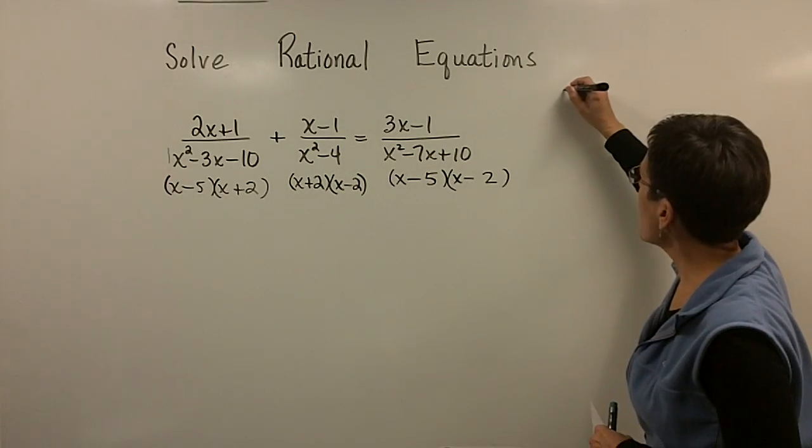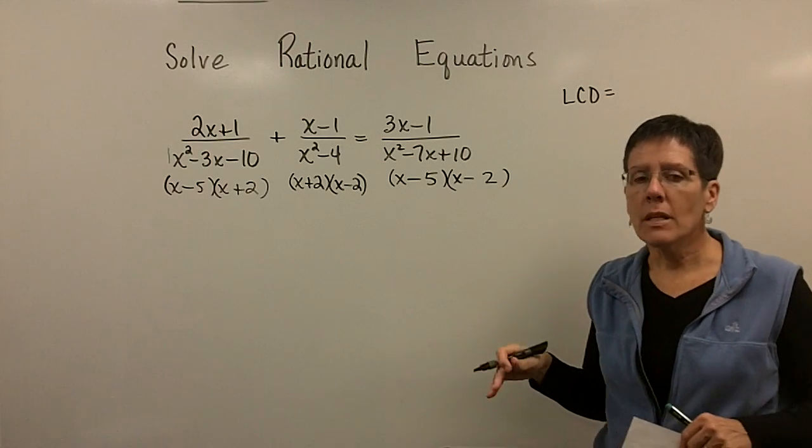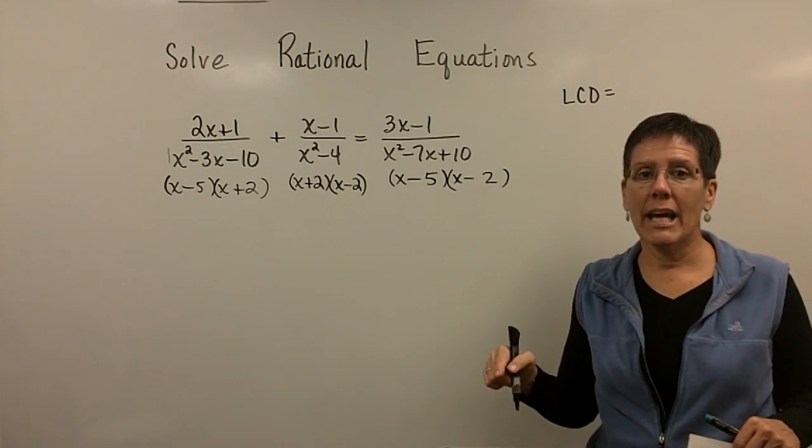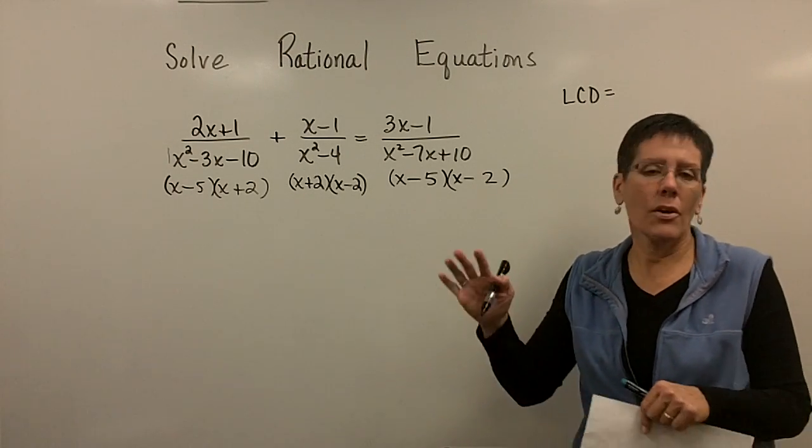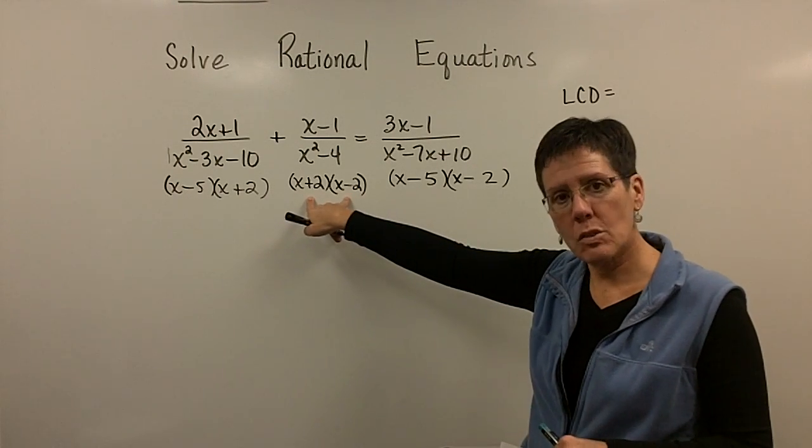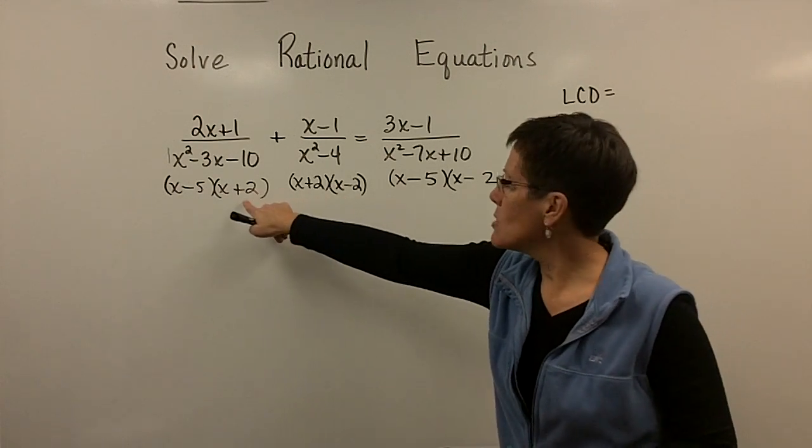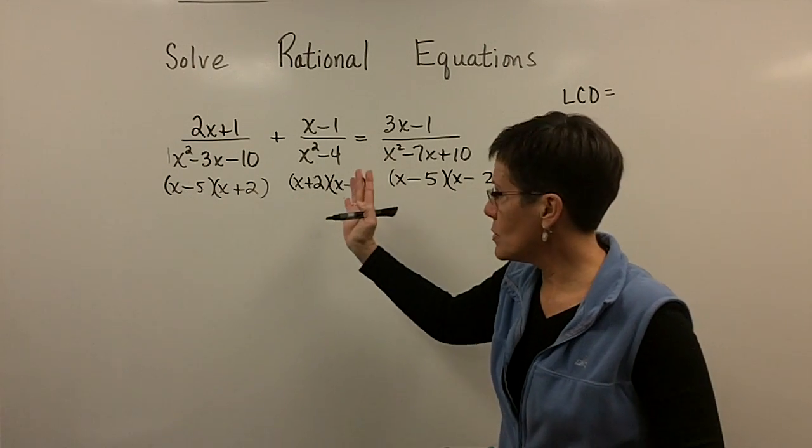So there's my factored forms of the denominators. Let's write down what the least common denominator is for this problem. It's each binomial, the greatest number of times they occur in any one denominator, so there are no duplicates. Like if there were two x plus 2s here, then I'd use x plus 2 twice.